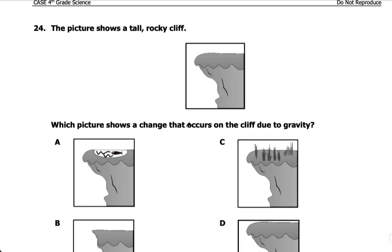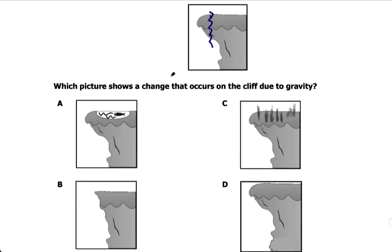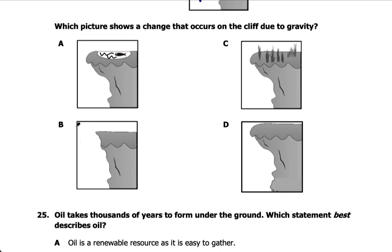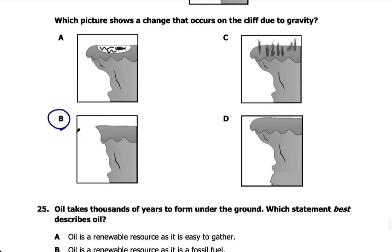Number twenty-four: the picture shows a tall rocky cliff. Which picture shows the change that occurs on the cliff due to gravity? Gravity is the force pulling things to earth, and it could cause part of the cliff to break off eventually. Gravity could pull a piece down, causing a crack, and that piece of the cliff would fall to the earth — which is letter B. The rest of the answer choices show the cliff basically being the same.